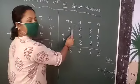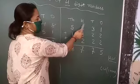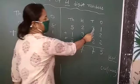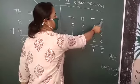Five thousand, two hundred, three tens, one ones.